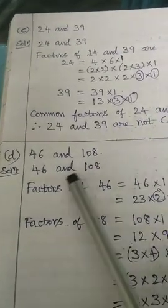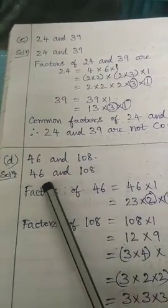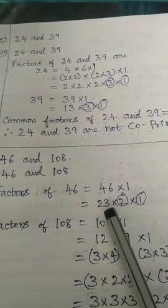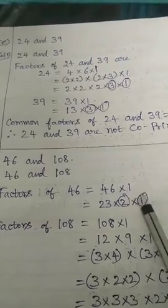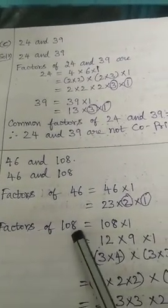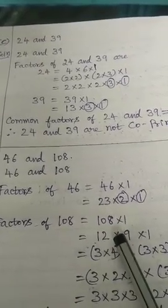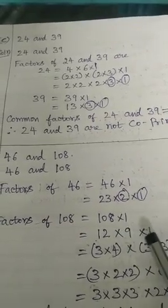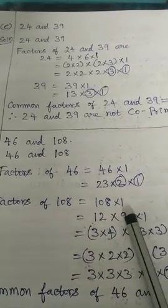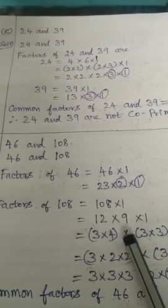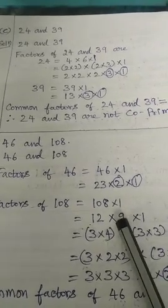Similarly, D question: 46 and 108. Write the given numbers. Factors of 46: 46 equals 1 × 46. 46 can be written as 23 × 2 × 1. Next, factors of 108: 108 will come in 12 tables — 12 × 9 = 108 — into 1. Then 12 is written as 3 × 4, and 9 is written as 3 × 3. So 108 equals 3 × 4 × 3 × 3 × 1.